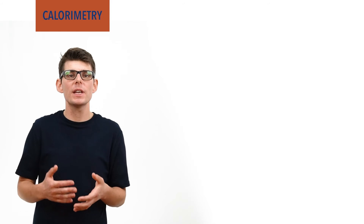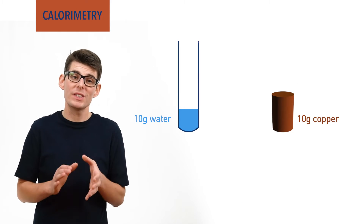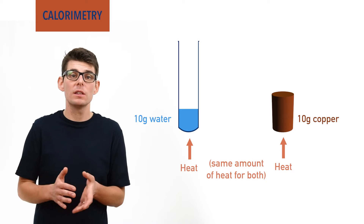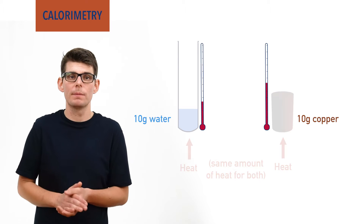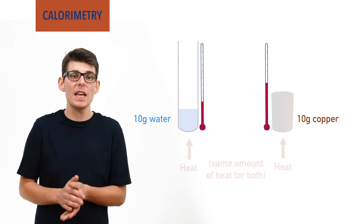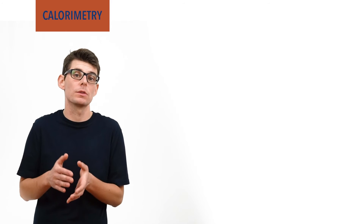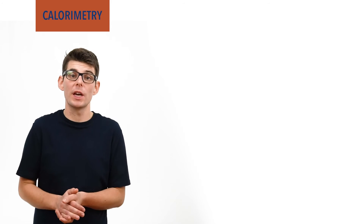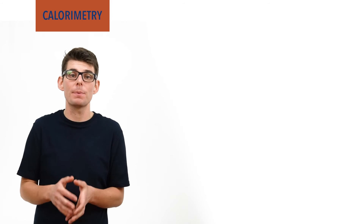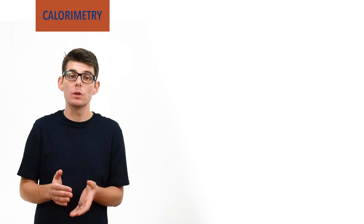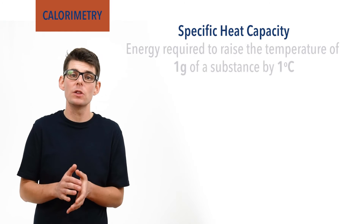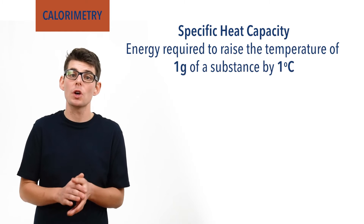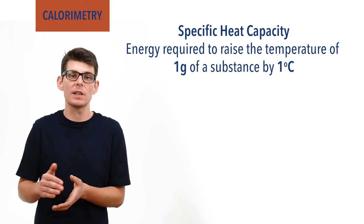Equally, if we gave 10 grams of water and 10 grams of copper the same amount of extra energy, the temperature of the 10 grams of copper would increase much more than the 10 grams of water. Because of this, if we want to use the temperature change of a reaction's surroundings to find enthalpy change, the amount and type of surroundings has to be considered. To do this we use specific heat capacity — the specific heat capacity of a substance refers to the amount of energy needed to raise the temperature of one gram of the substance by one degree Celsius.